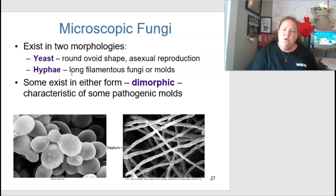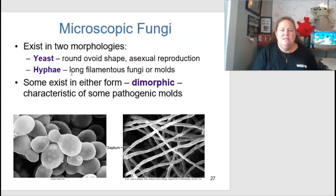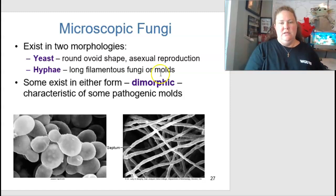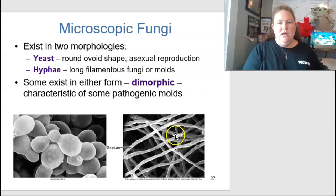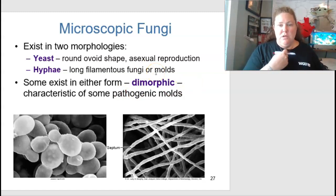Fungi exist in two morphologies: yeast, which are round ovals reproducing asexually, and hyphae, which are long filamentous molds. Some exist in other forms — dimorphic, meaning two forms — and these are characteristic of some pathogenic molds.